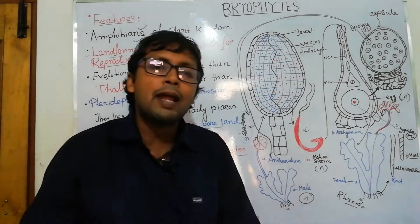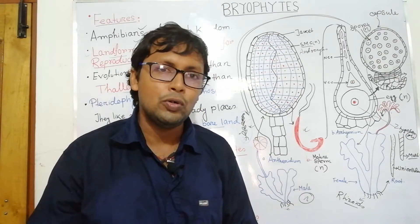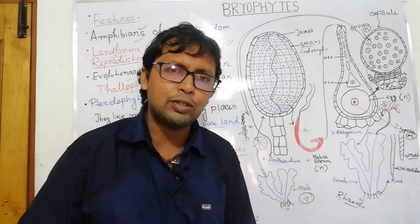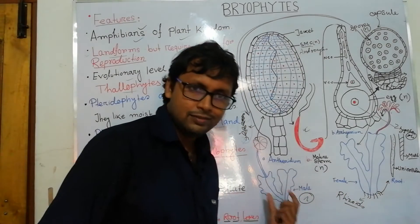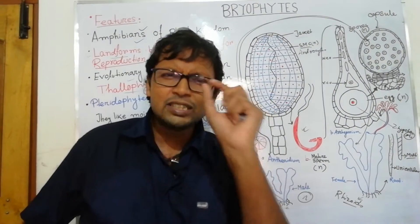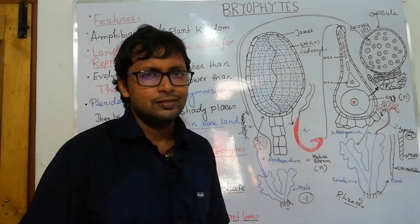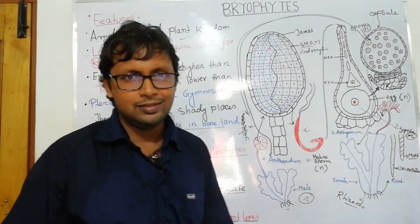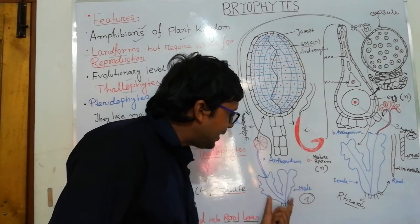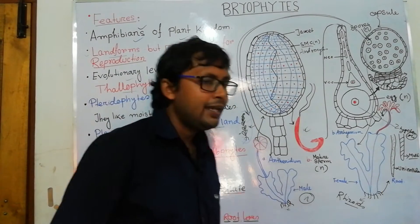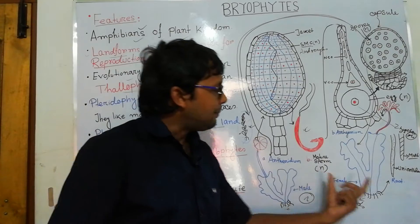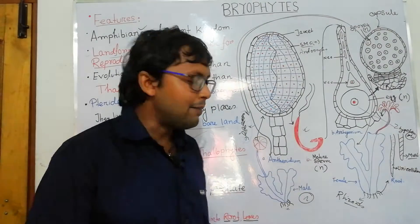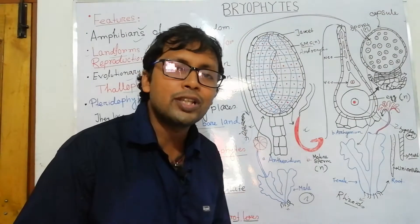The main plant body is gametophytic, so in these lower plants the major part is gametophytic — that is haploid — and only a very small part is sporophytic. The gametophytic body means gamete-bearing body. The male plant bears male gametes and the female plant bears female gametes.